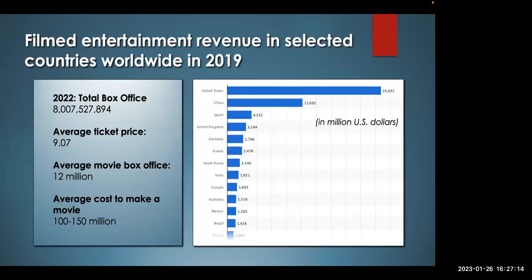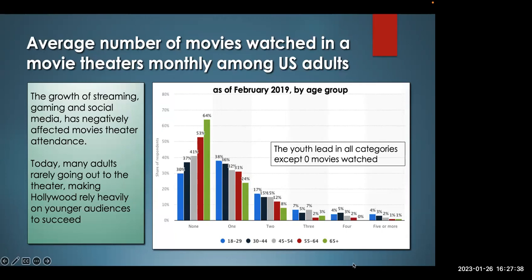The total box office from the United States shows an average ticket price of $9, and the average movie box office is only $12 million, when the average cost to make a film is $10 to $150 million — so you can see there's a problem. Looking at the average number of movies watched monthly among U.S. adults, the 18 to 29 group makes up the most people attending movies. This is why Hollywood relies heavily on younger audiences — it's why we see superhero movies, romance movies, and horror films, because these audiences consistently keep theater doors open.